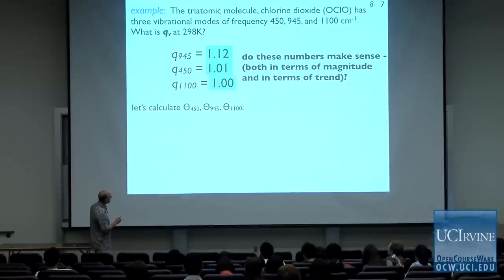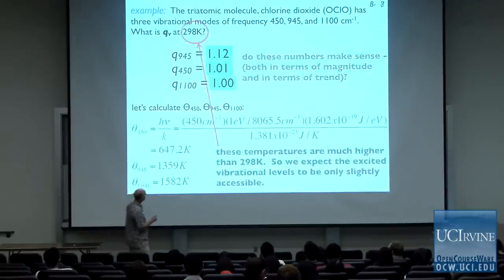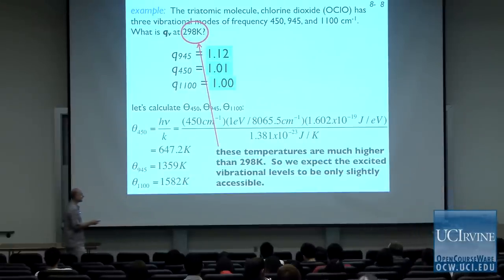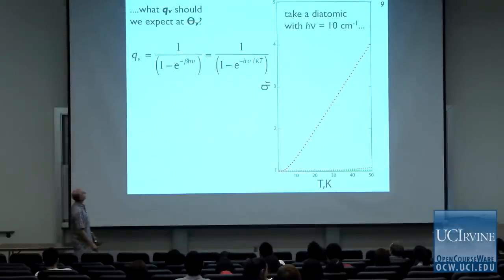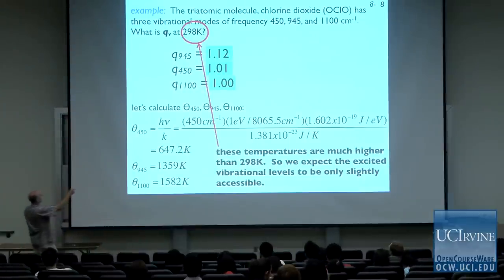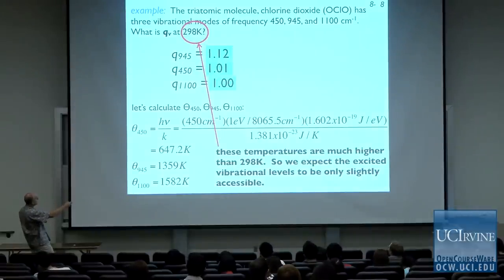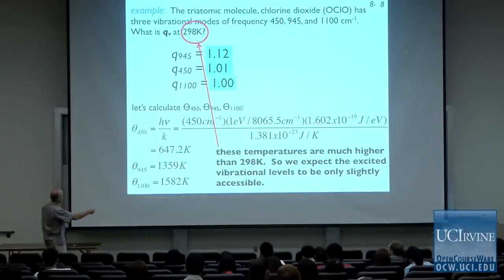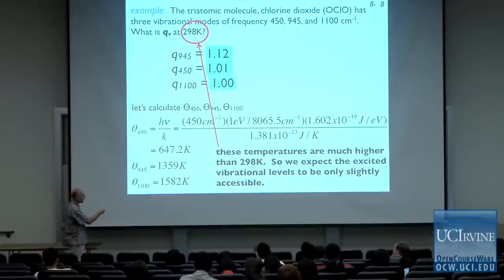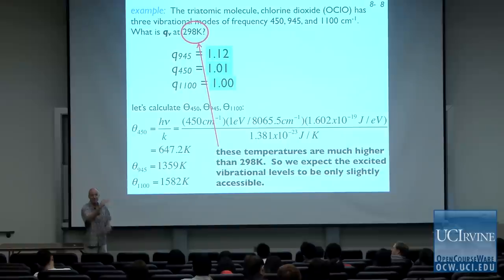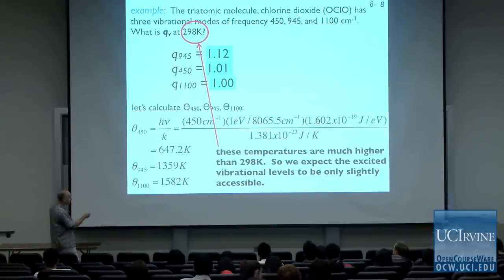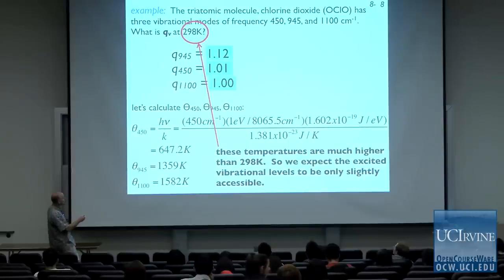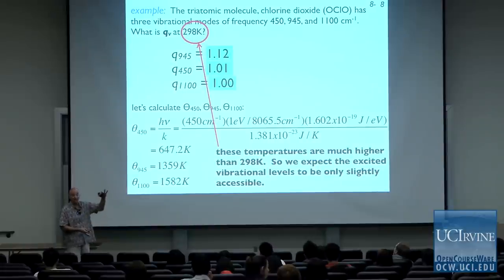What should we expect these vibrational partition functions to be? It's easier to have intuition about translation and rotation because in both cases the temperature is always much higher than the characteristic temperature. So let's calculate the characteristic vibrational temperatures for 450, 945, and 1100 wave numbers. I calculated those and got 647 K, 1300 K, and 1500 K — temperatures way higher than the temperature we're studying. At 298 K, we shouldn't get significant occupation of the 450 wave number mode until about 600 K, and the 945 wave number mode until 1300 K.